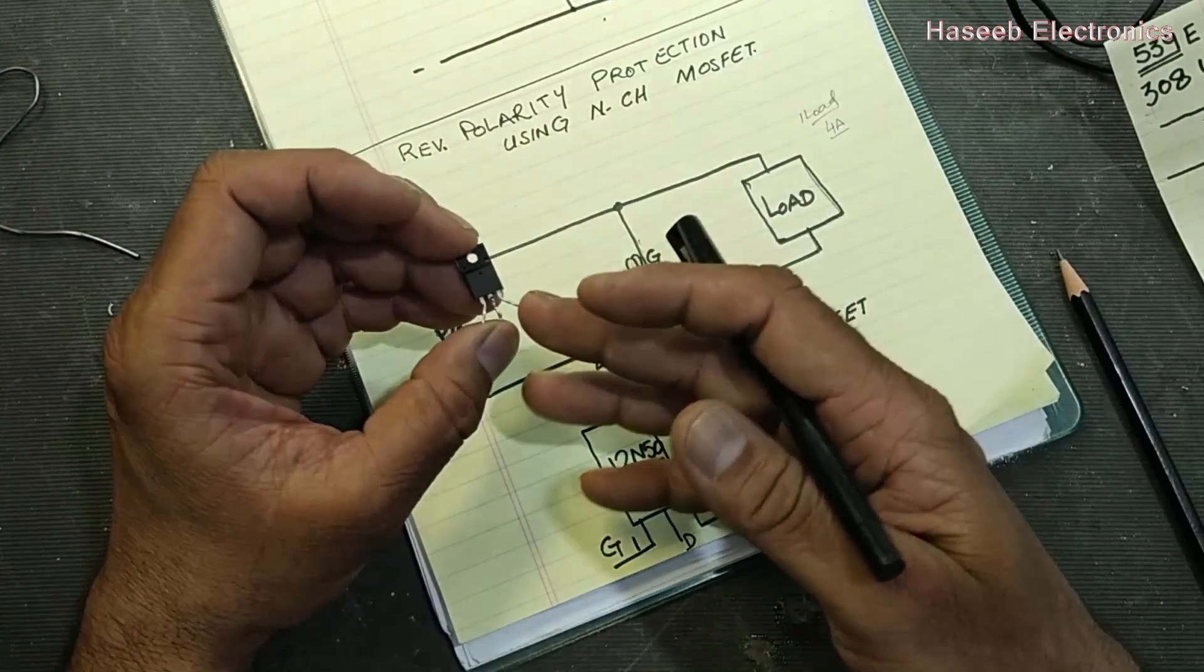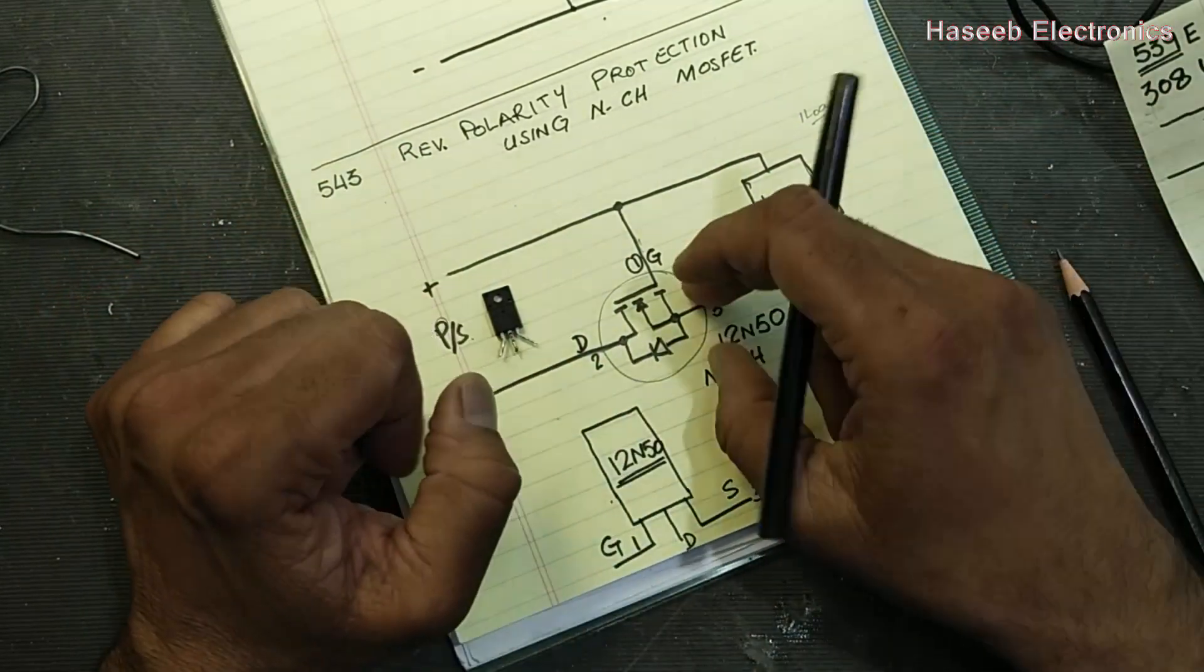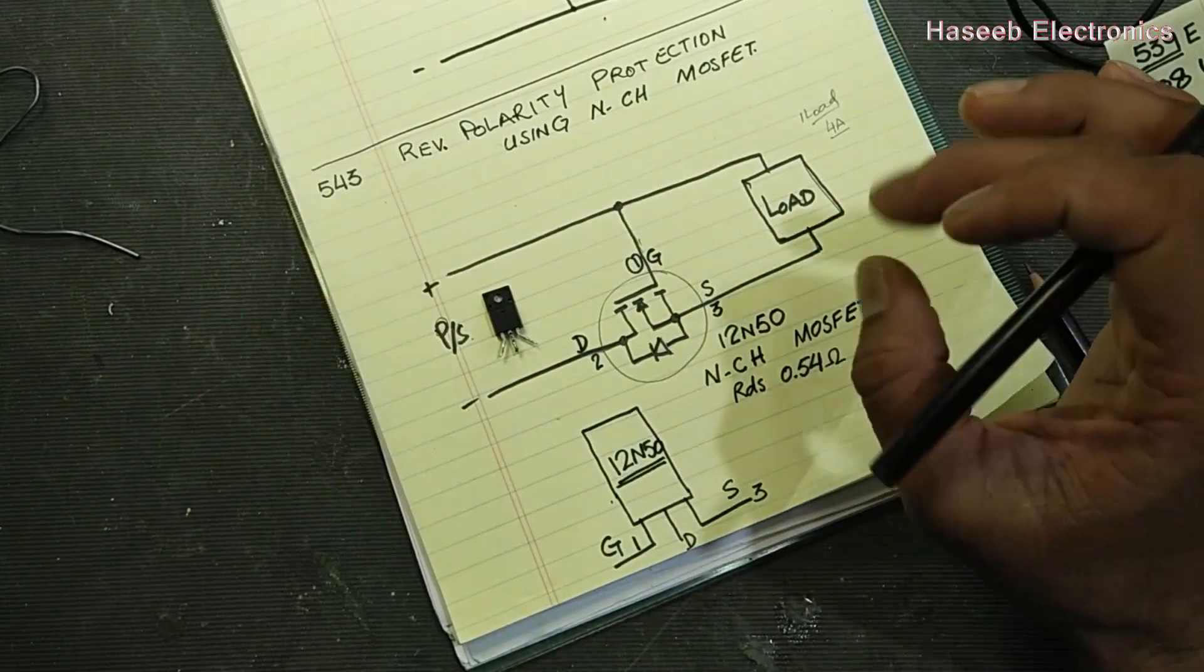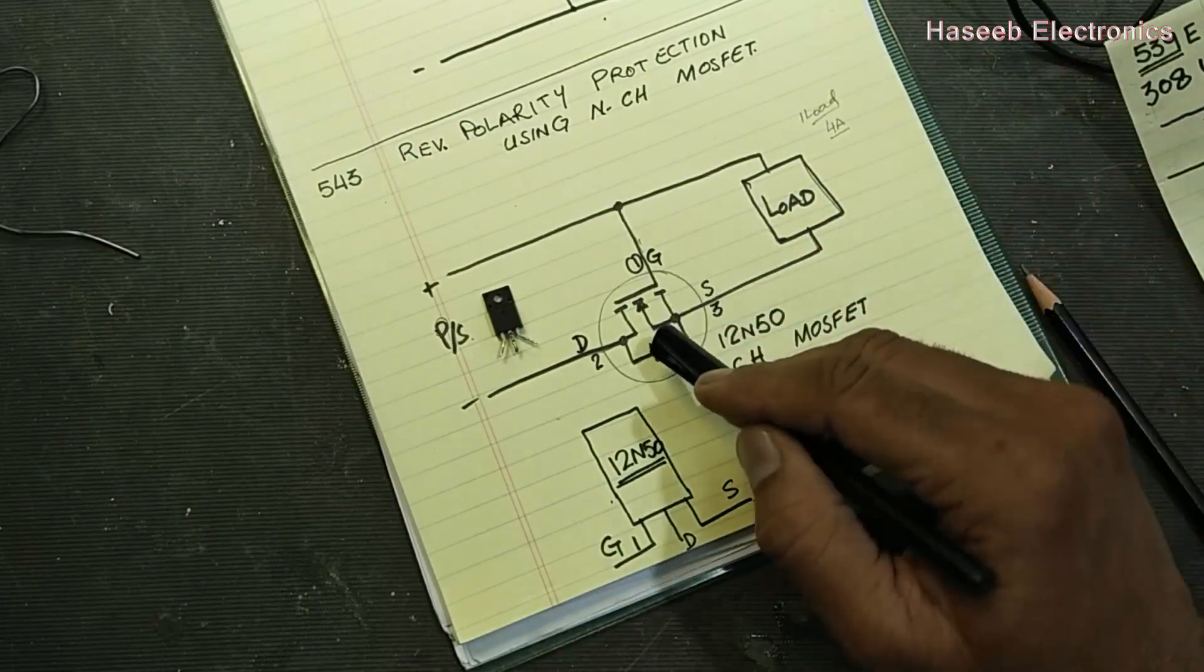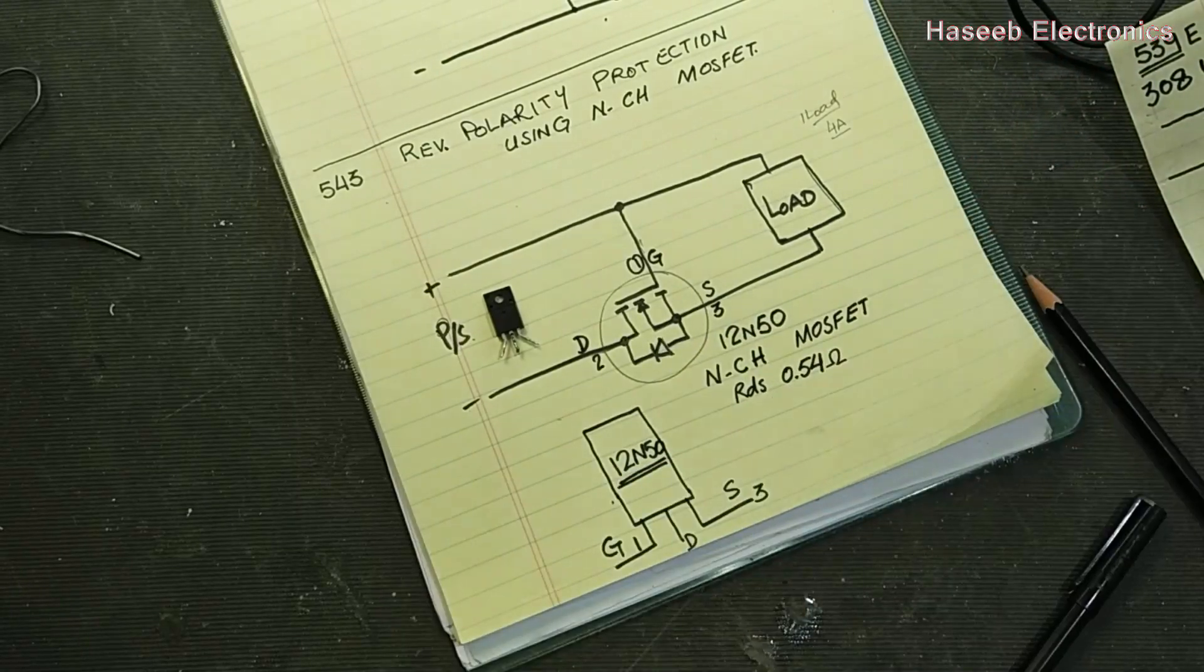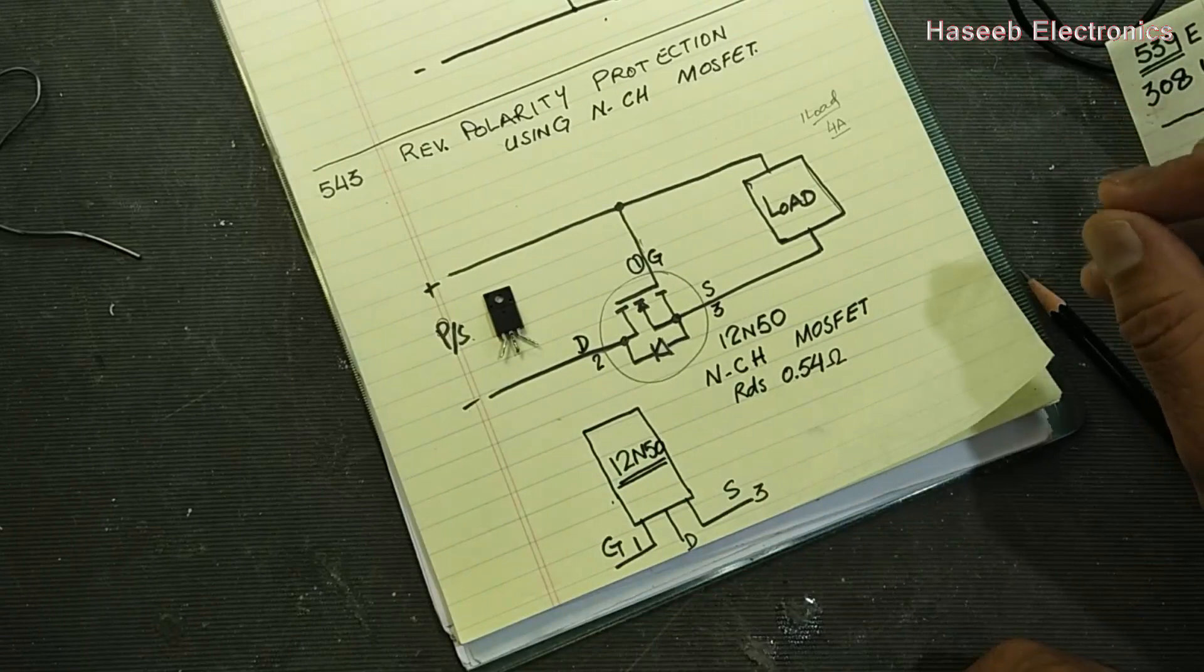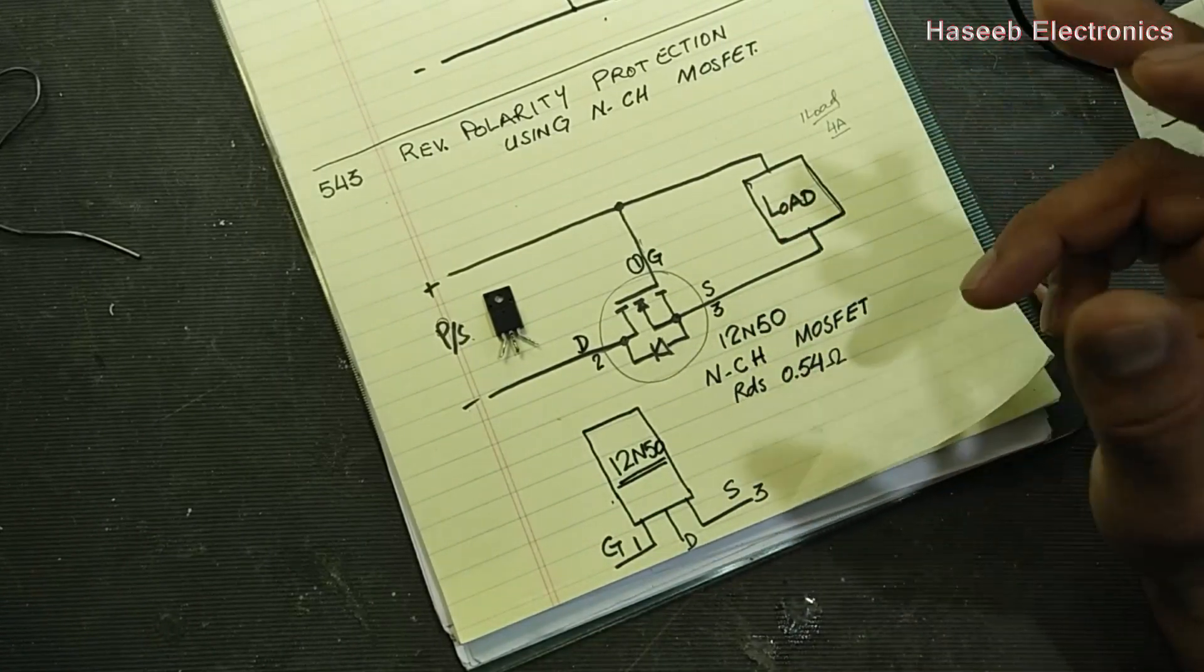The third parameter in the MOSFET, that is the most important factor: RDS(on) resistance, drain to source on. MOSFETs have their on-channel resistance that in milliohms. We can say there is almost no resistance, it will drop a very little amount of voltage.